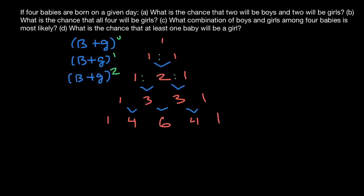For two children, the combinations are: two girls, or a girl and a boy and a boy and a girl, and the last combination is two boys. So the ratio is one to two to one. The probability that out of two children there can be a boy and a girl — it can be first child a boy and second a girl, or first child a boy and second a girl — is twice as likely as just two girls or two boys.